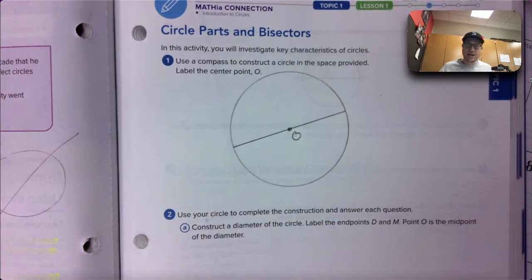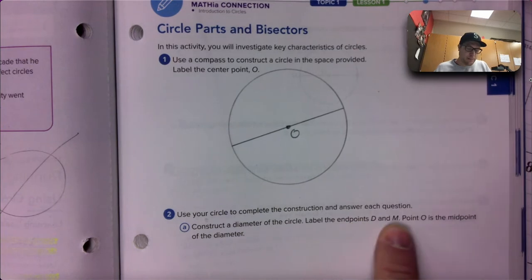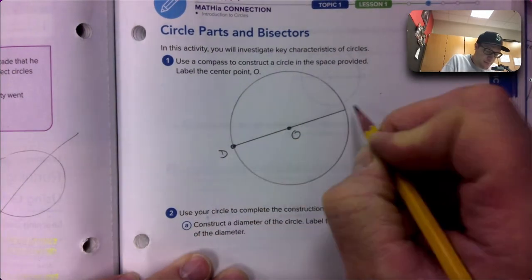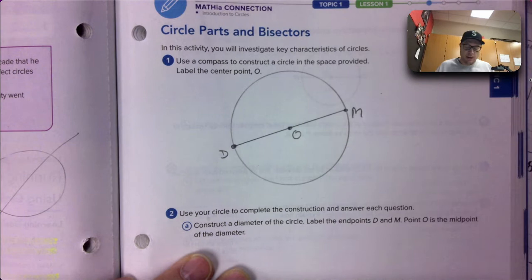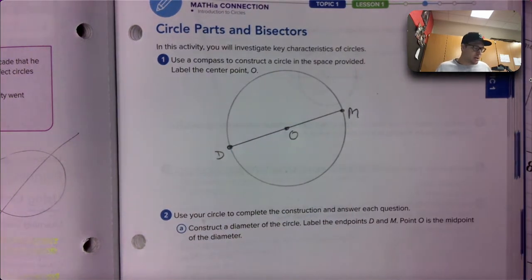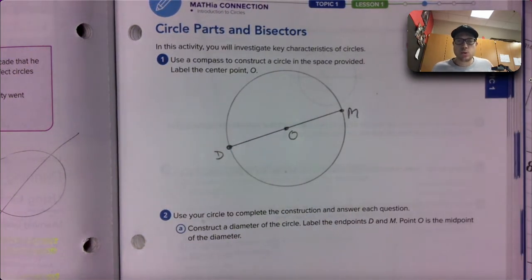Label the endpoints D and M. Not sure why they picked those letters. Maybe someone who had the initials D and M wrote the question. That puts O as the midpoint. O is in the middle. All right.